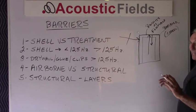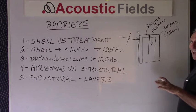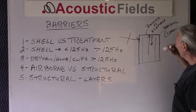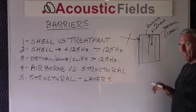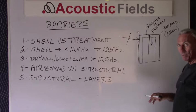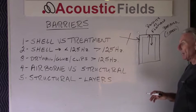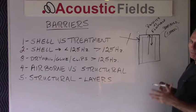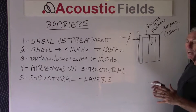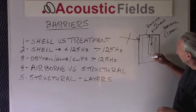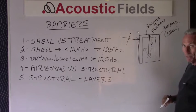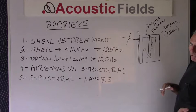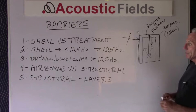We need to distinguish between that and treatment inside. The barrier keeps noise in and keeps noise out. But treatment — diffusion and absorption — are the processes that we use inside the room to manage all the energy that's inside the room. So two different areas: barriers and treatment. Barriers are shells; treatment is for the inside.